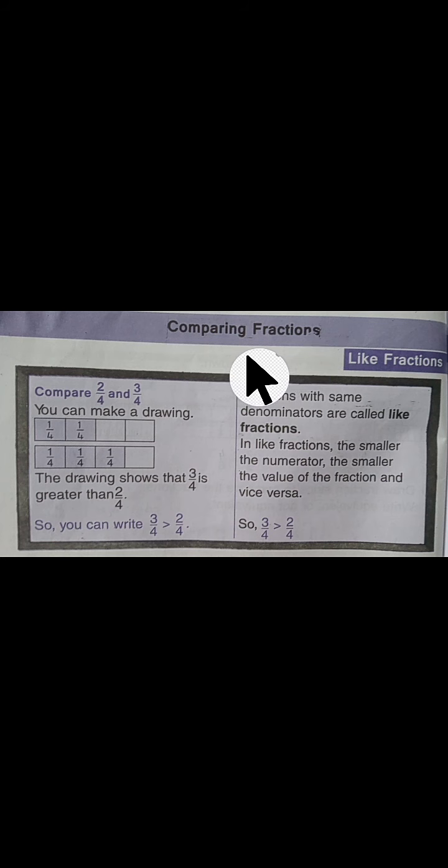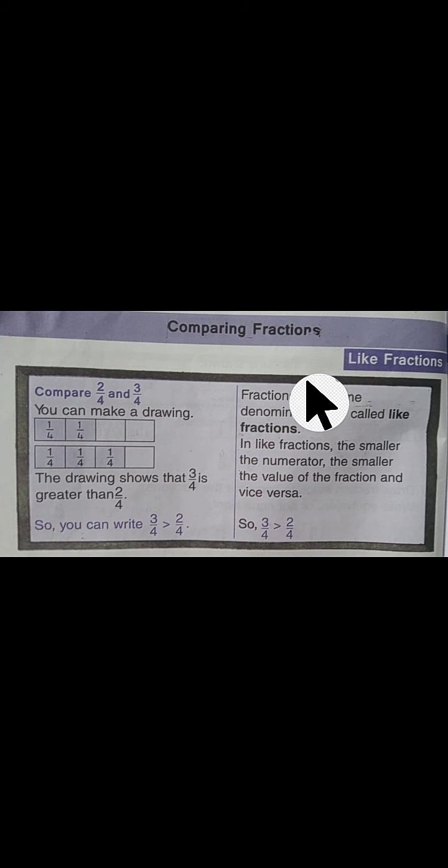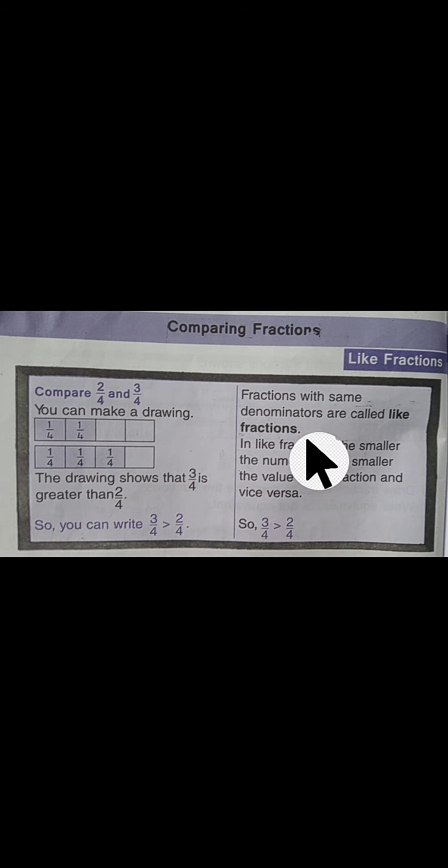Our next topic is comparing fractions. When comparing fractions, students first check if the fraction is a like or unlike fraction. Like fractions are those fractions which have the same number in the denominator. For example, 1 by 6, 3 by 6, 9 by 6, 8 by 6 — all these fractions are like fractions. Here is another example in the book: 2 by 4 and 3 by 4.